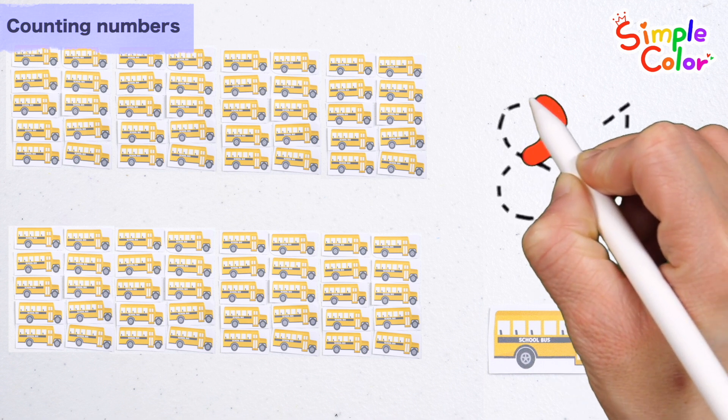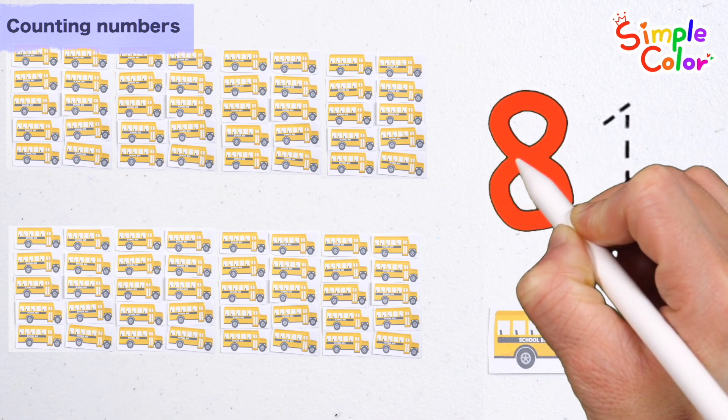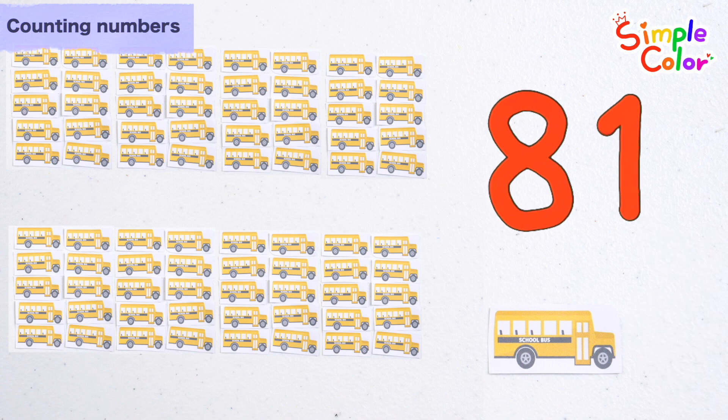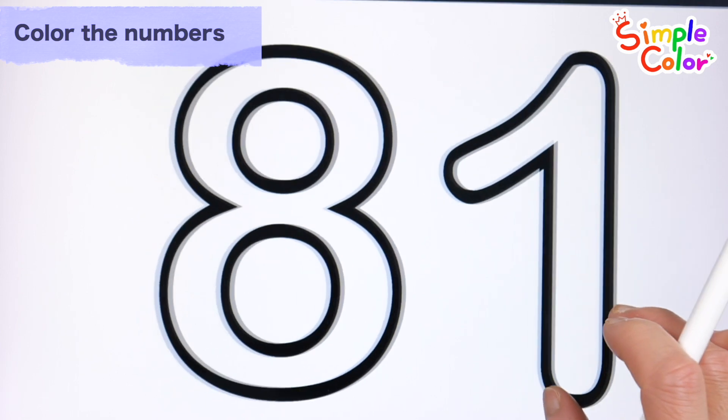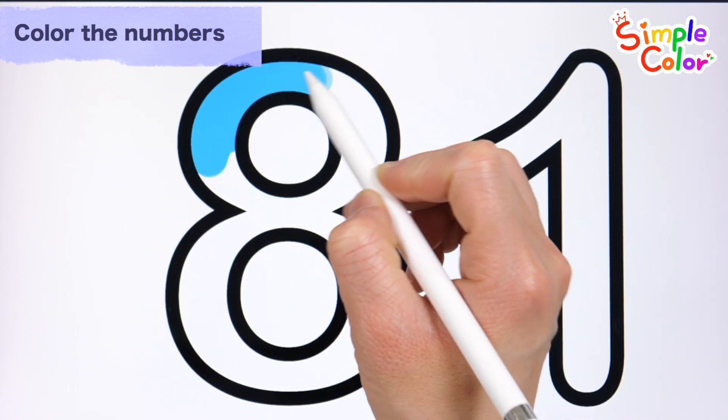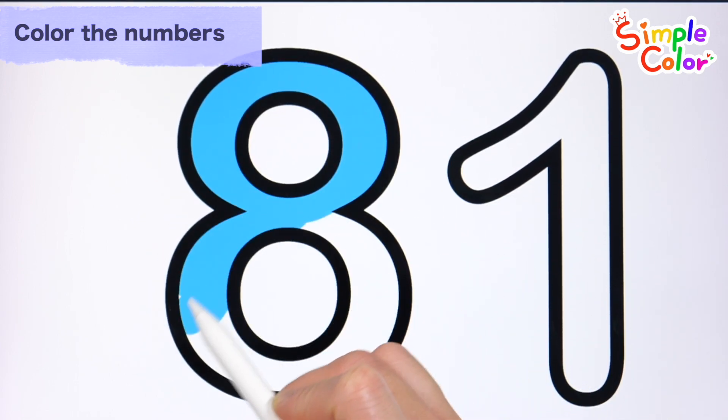Shall we write the number by tracing the dotted line? 81. Very good! Let's color it! Blue.